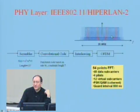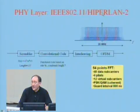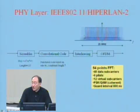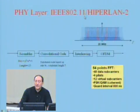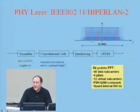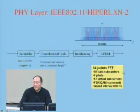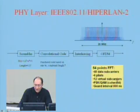With OFDM adopted, let's look at the specifications for 802.11a and HiperLAN/2 — the same technology also applies to 802.11g, which uses 2.4 GHz rather than 5 GHz. They have 64 carriers total: 48 are data carriers, 4 are pilot carriers, and 12 are virtual subcarriers. This gives flexibility — for example, if one carrier is in deep fade, you can use another.